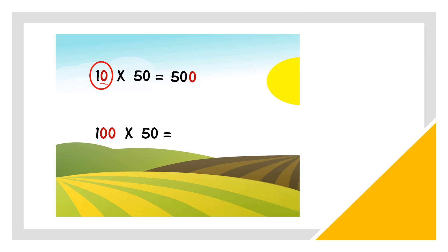100 times 50. So circle 100. And then the number that we didn't circle, we copy back, 50. Then look at 100. We have 2 zeros. So add 2 zeros at the back.